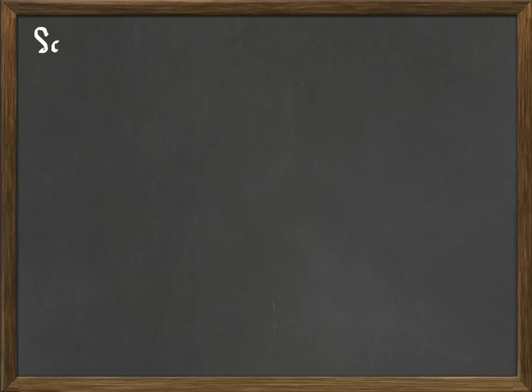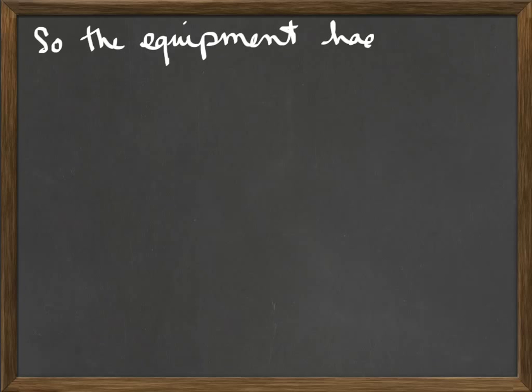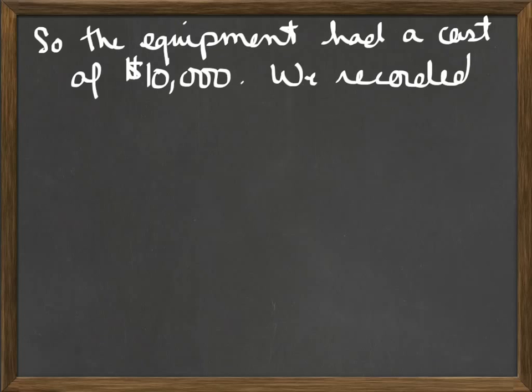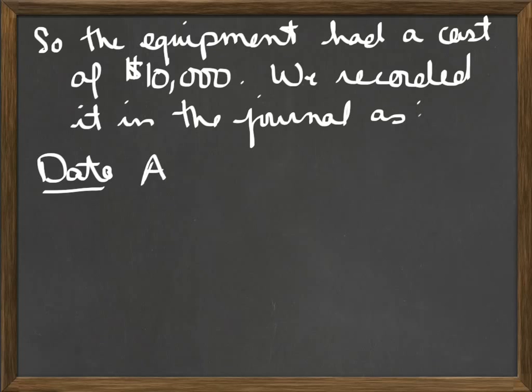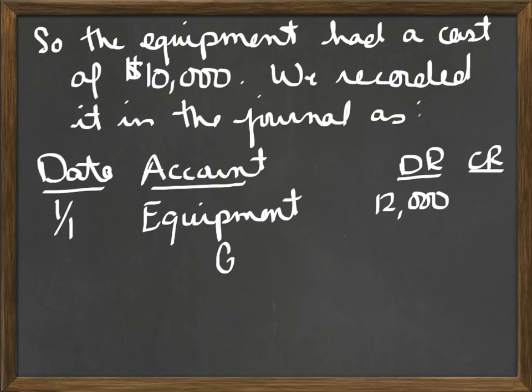We've looked at straight line depreciation and units of production depreciation. Now let's take a moment and look at double declining balance. We're at the same point — we've got this piece of equipment that we paid a total of $12,000 for. Remember on January 1st, we debited equipment for $12,000 and credited cash for $12,000.